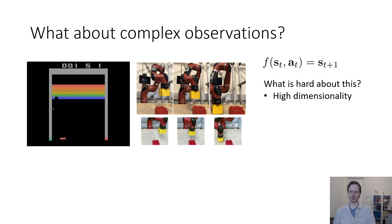What is hard about doing this with images? Well, first, images have very high dimensionality, which can make prediction difficult. Images also have a lot of redundancy. The different pixels in the image for the Atari game are very similar to each other, and that means that the state contains a lot of redundant information.